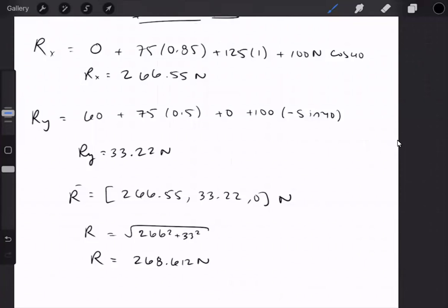If I wanted to look for the direction of it in terms of an angle, the opposite over adjacent, 33.22 over 266, would be 7.10 degrees.